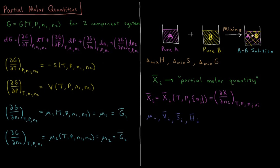This video will discuss partial molar quantities in thermodynamics. We're going to go from looking at the thermodynamics of a single-component system — for example, pure liquid A or pure liquid B — and think about what happens when we start to mix things, such as a solution where A and B are mixed together. In this chapter we'll look at quantities like the enthalpy change of mixing, entropy change of mixing, and Gibbs energy change of mixing. To do that, we need to introduce the idea of partial molar quantities.